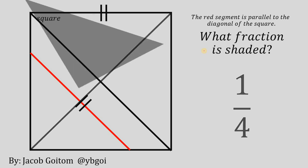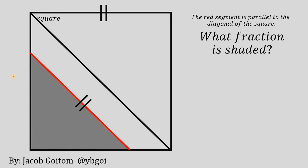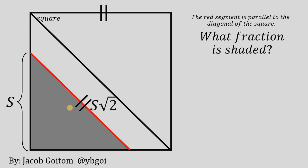For our second solution, let the side length of the triangle equal S. Since we know it is an isosceles right triangle with 45-degree angles, the hypotenuse must be equal to S multiplied by the square root of 2. We know the red segment must equal the side length of the square, so the side length of the square is also S times the square root of 2.